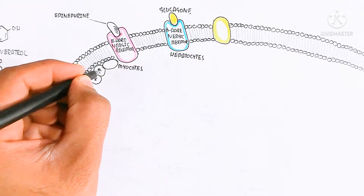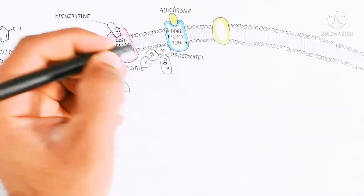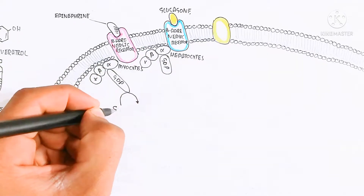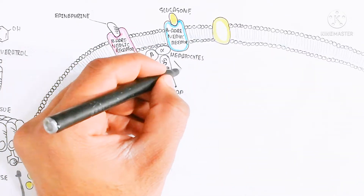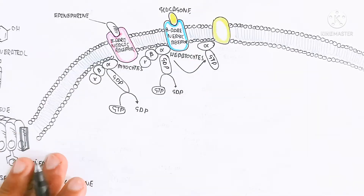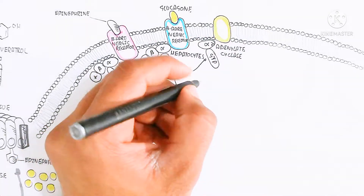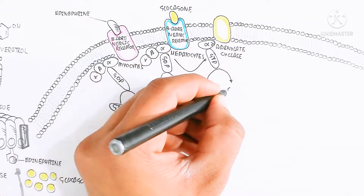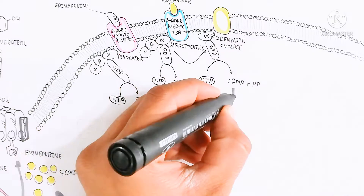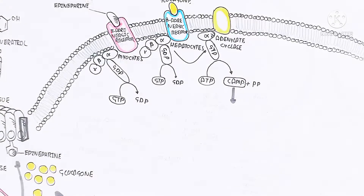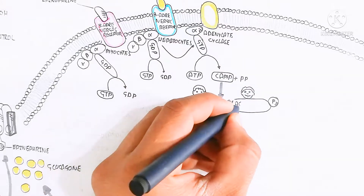The G-protein coupled receptor has a cytosolic trimeric protein — alpha, beta, and gamma subunits. The alpha subunit contains GDP in its inactive form, and is activated by GTP conversion causing alpha-GTP separation. This separation activates the adenylate cyclase enzyme, which produces cyclic AMP from ATP, releasing pyrophosphate.